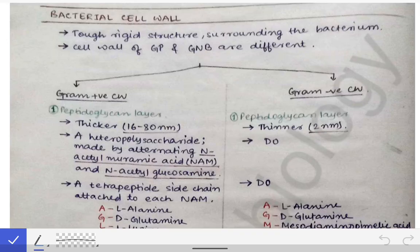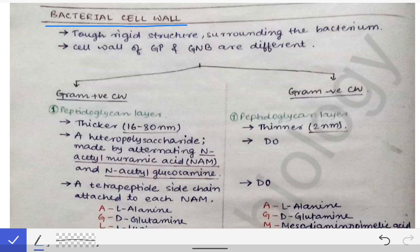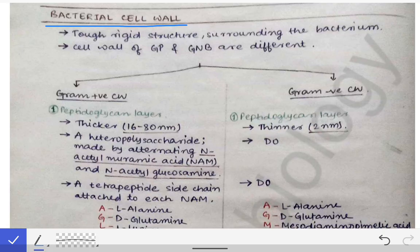Today we will look at a very important topic which is very frequently asked in university exams as a short note, short answer question, or as a difference question. The topic is the bacterial cell wall. We have seen earlier that bacteria are of two types: gram-positive bacteria and gram-negative bacteria. Bacteria have cell walls outside their cell membrane, and the composition of that cell wall is a very unique structure to bacteria. Gram-positive and gram-negative bacteria possess different kinds of composing structures in their cell wall.